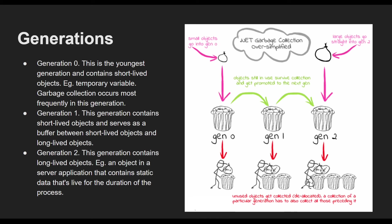Coming to generation 2. This generation contains long-lived objects — for example, an object in a server application that contains static data that's live for the duration of the process. Objects in generation 2 that survive a collection remain in generation 2 until they are determined to be unreachable in a future collection. Garbage collections occur on specific generations as conditions warrant. Collecting a generation means collecting objects in that generation and all its younger generations. A generation 2 garbage collection is also known as a full garbage collection because it reclaims objects in all generations — that is, all objects in the managed heap. I hope this short talk about how garbage collection works in case of .NET Core was helpful to you. Thank you.